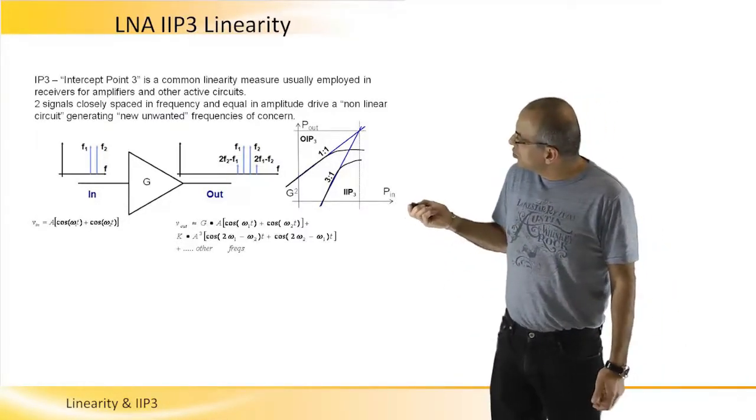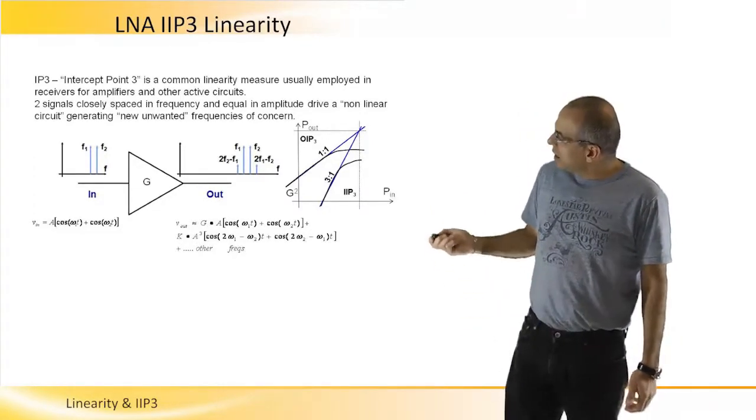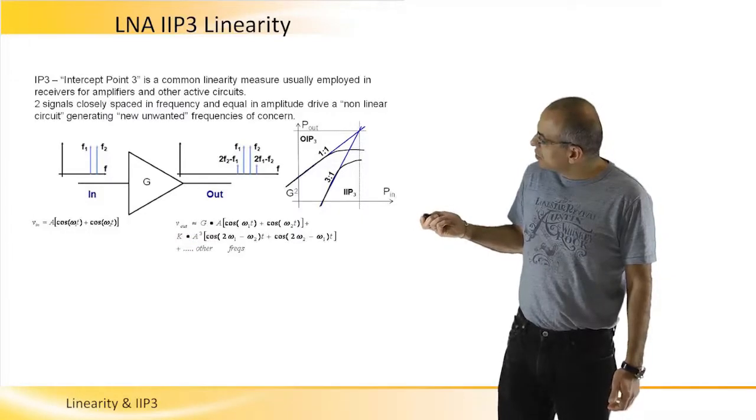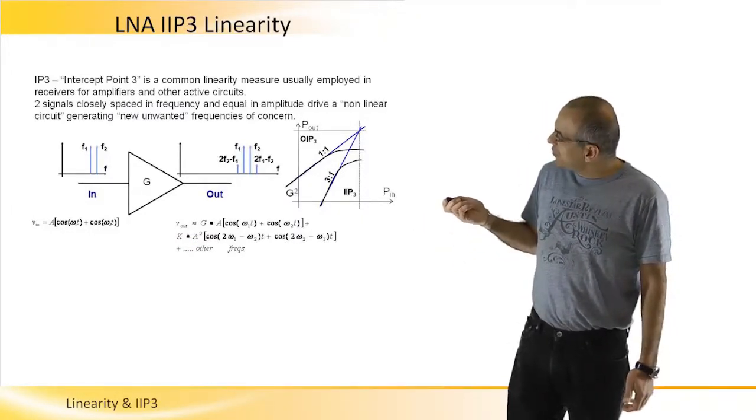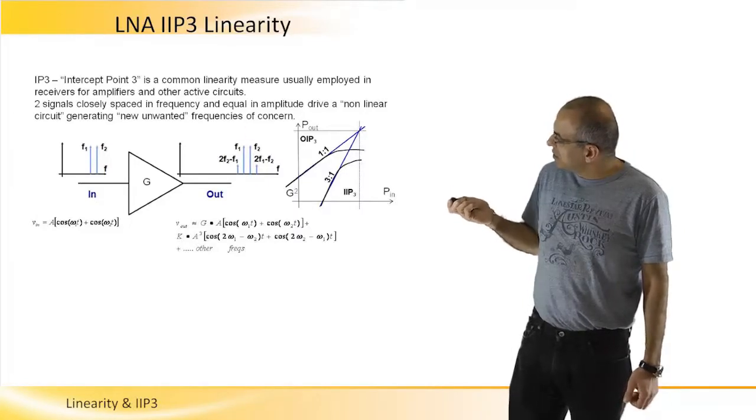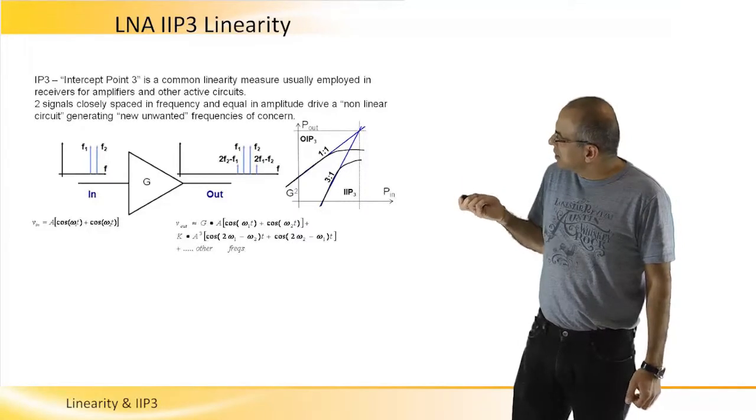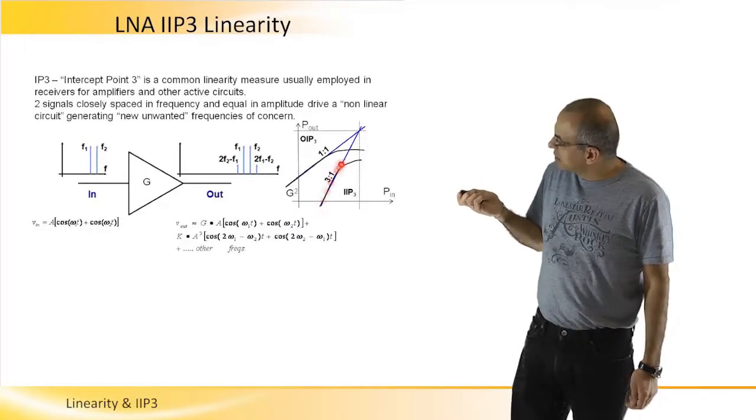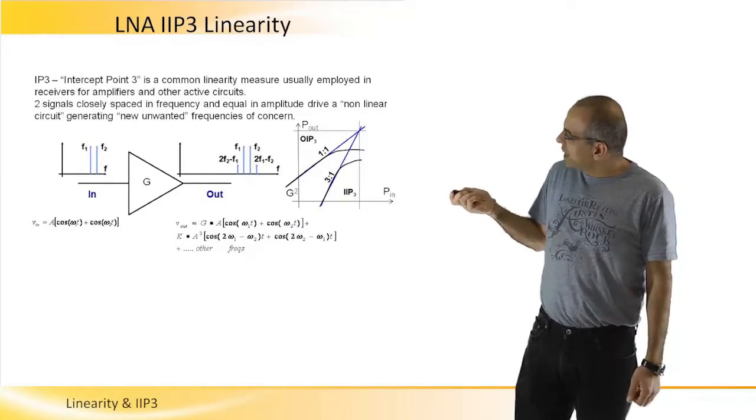These two new products, the third order products, will have a third order coefficient. And if we look at the input power of the original signals amplified versus the new spurious products, third order spurious products, and we will just draw the lines, the linear lines of these products along the input power.